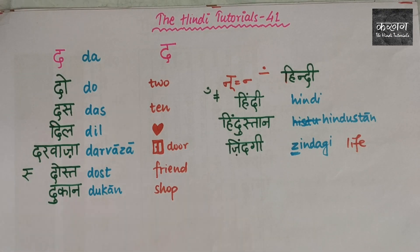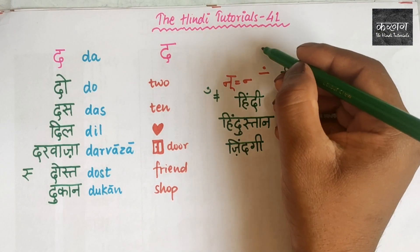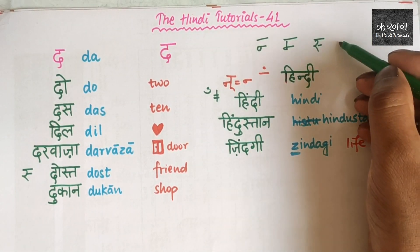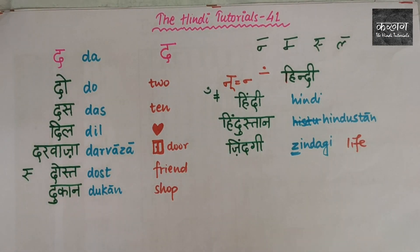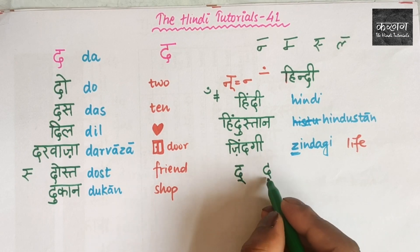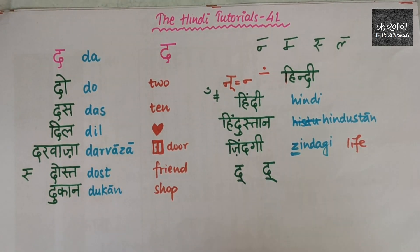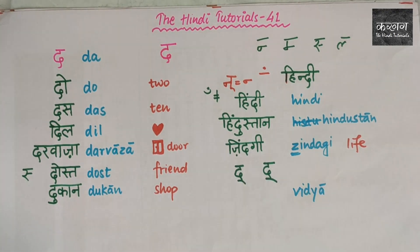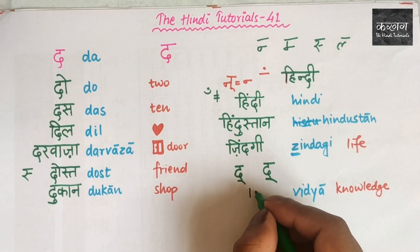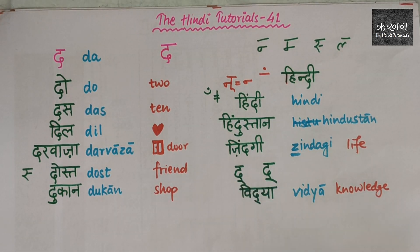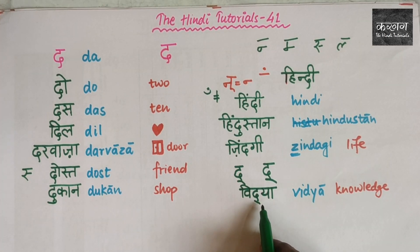Now we have learned how to write a consonant without a vowel. We write half-N like this and S like this, L like this. But how to write the dental D without a vowel? To write D without a vowel, we add a mark below it. For example, the word 'Vidya'. Vidya means knowledge. Notice there is no vowel between D and Y — that is how we write it.